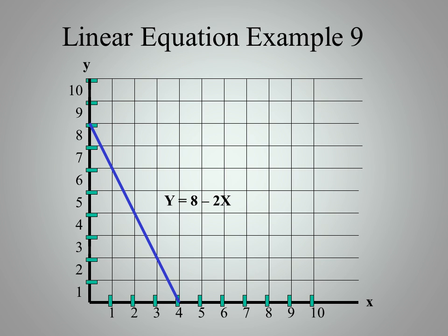Here again, I've now given it a negative slope of 2. I still have an intercept of Y equal to 8. I have an X intercept of X equal 4 and I have a slope of minus 2.